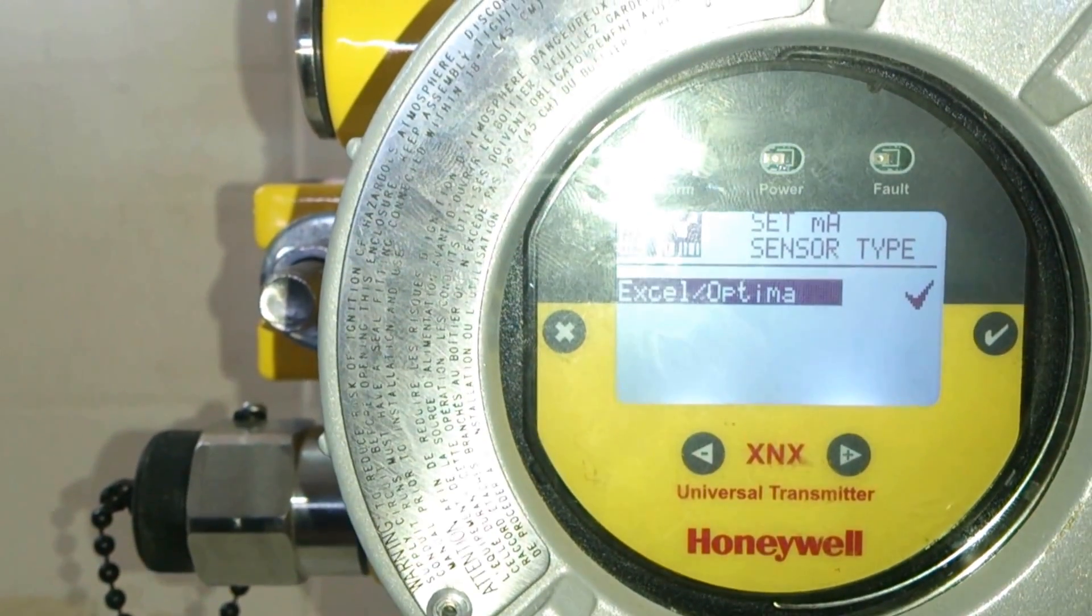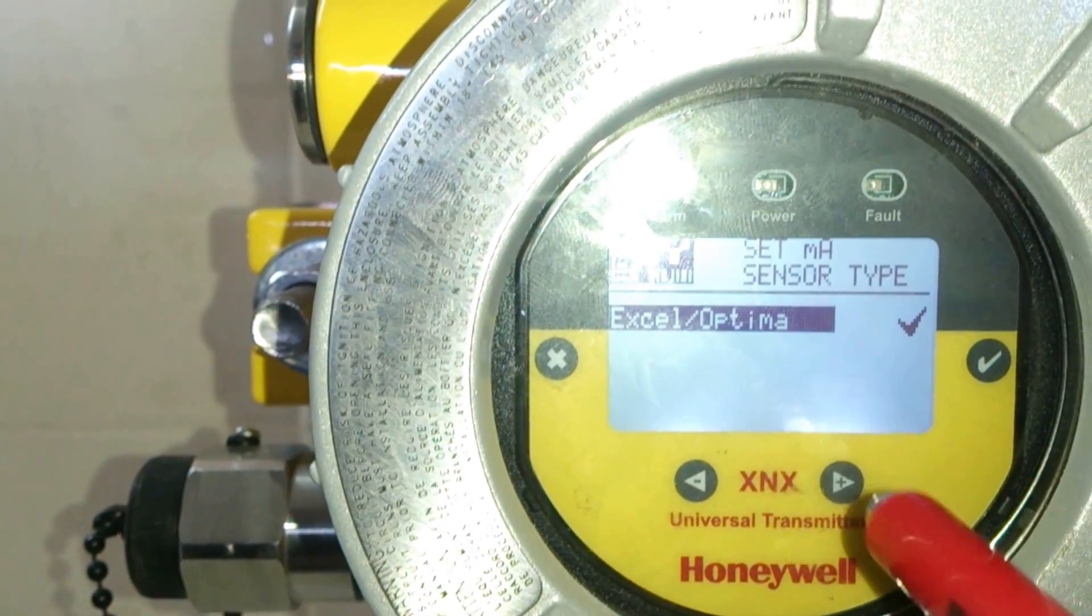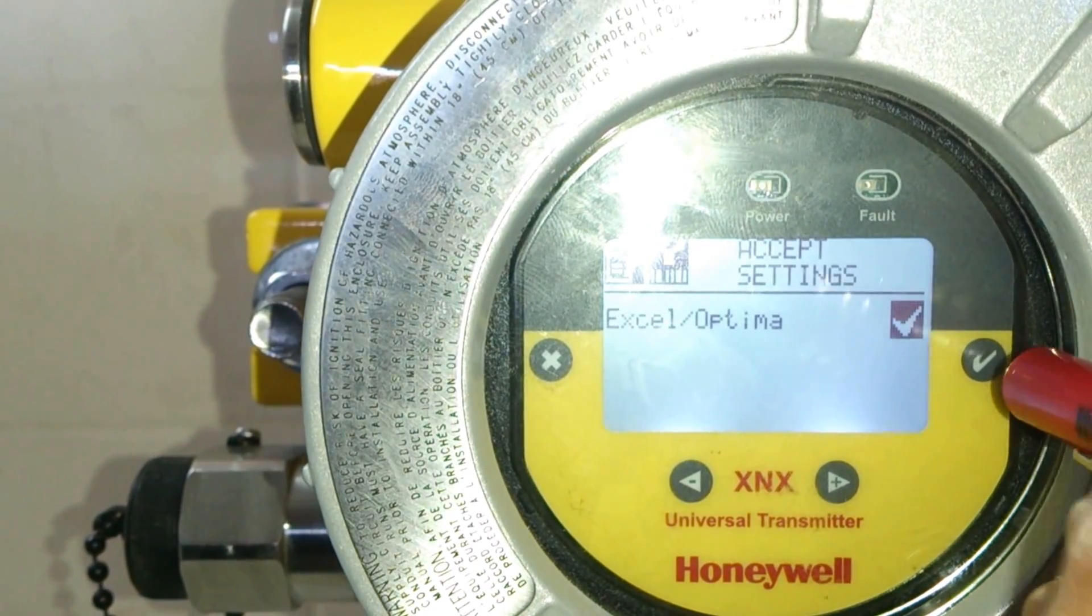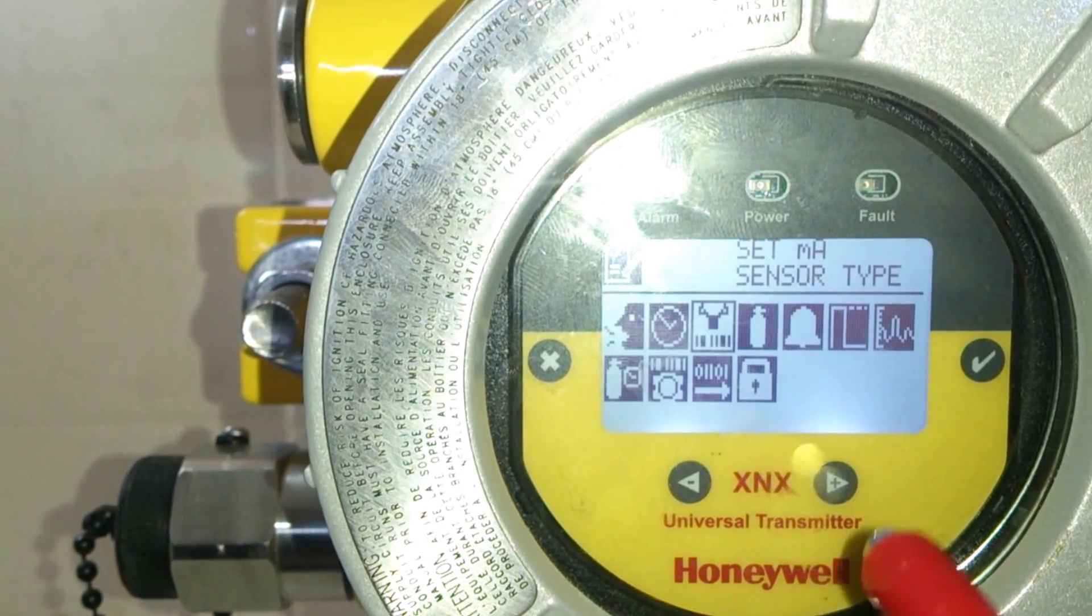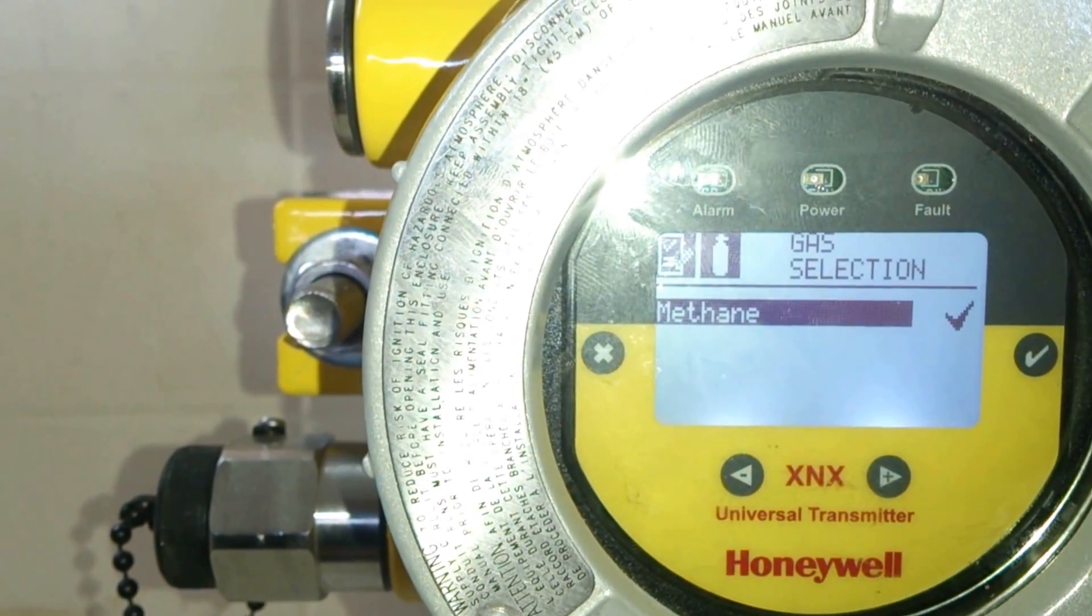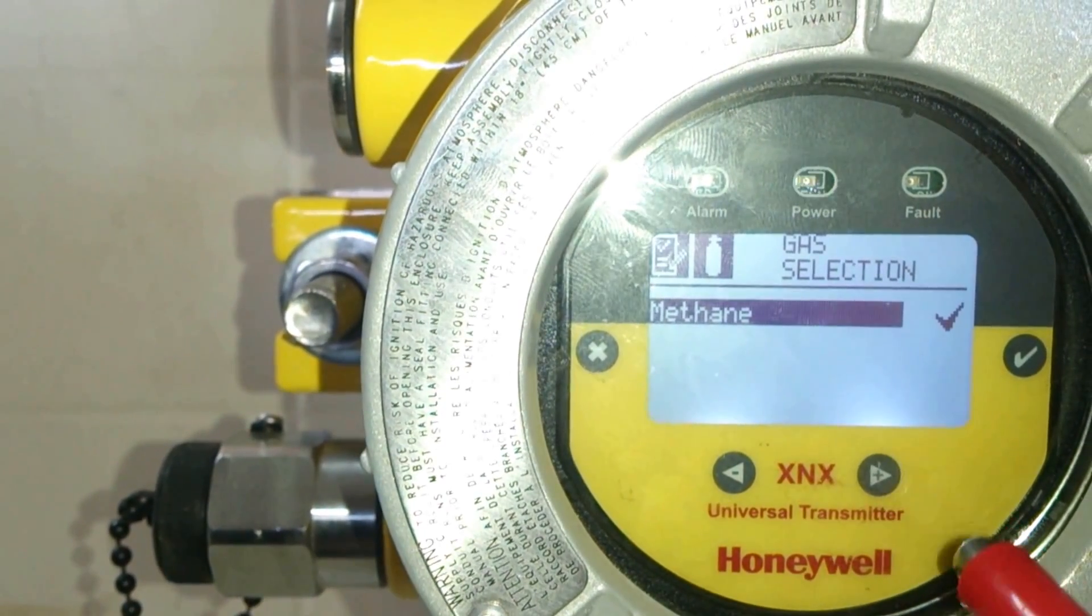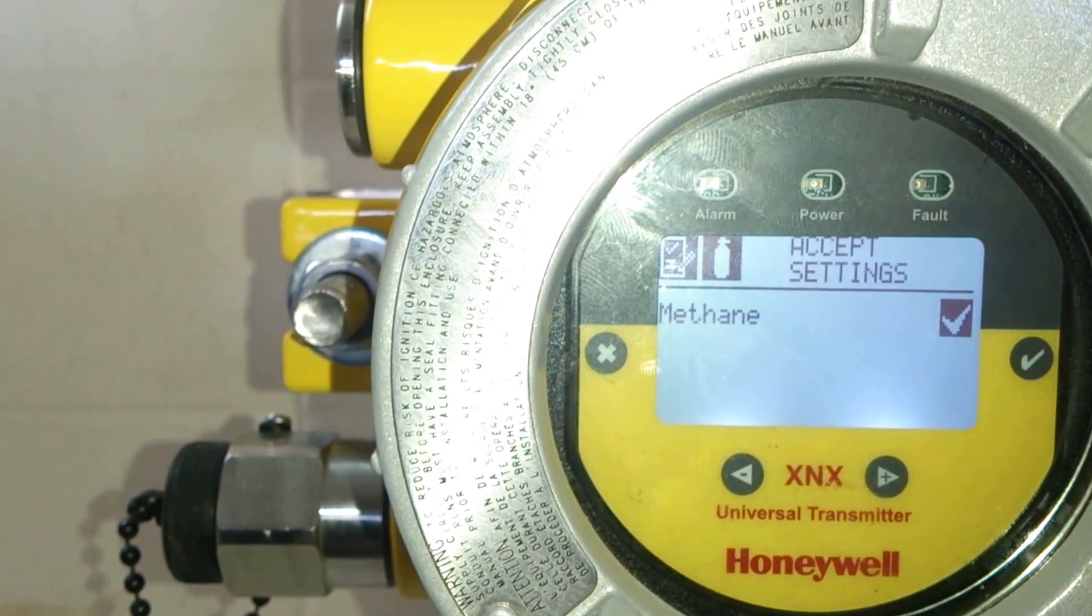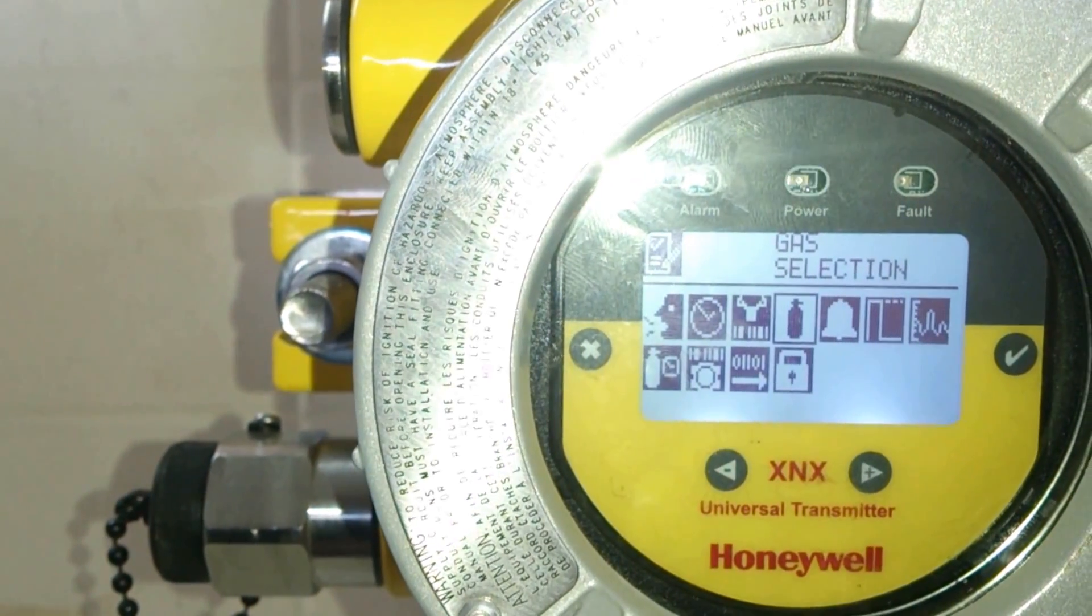Now we have set milliamp sensor type which is already selected, that is XL Optima. Now we move on to the next option, that is gas selection. Under gas selection we have methane that is preset. It is once again selected. We go to the previous menu.